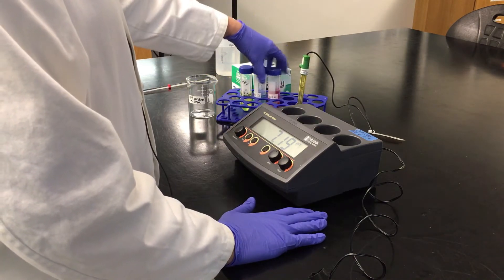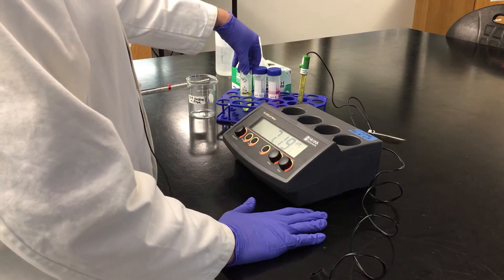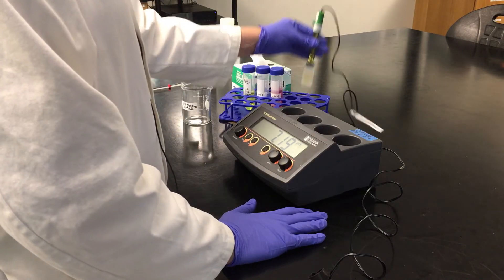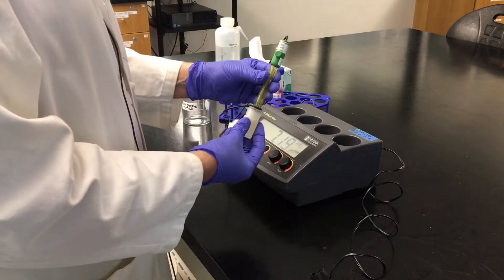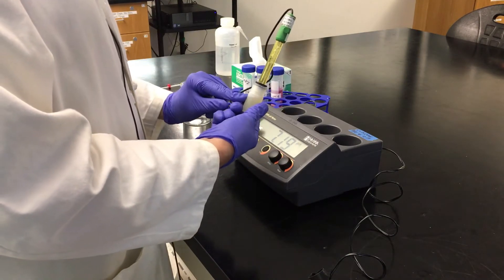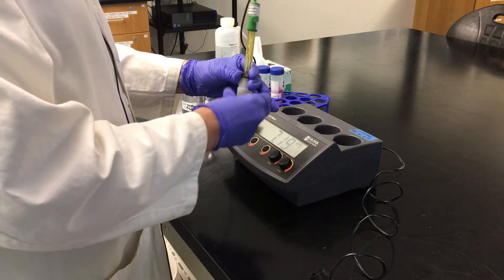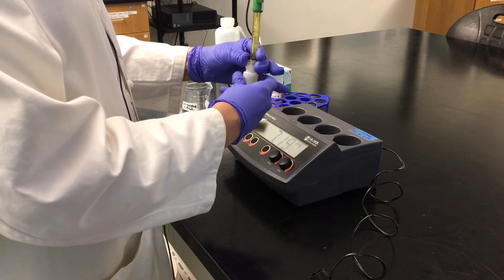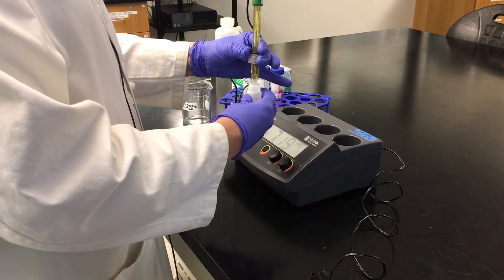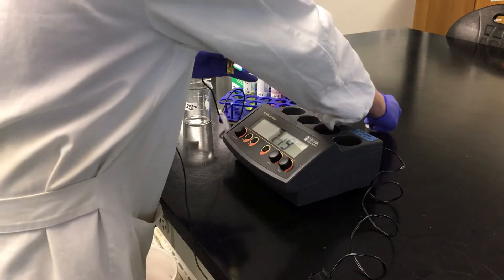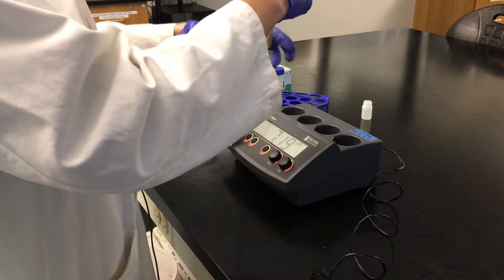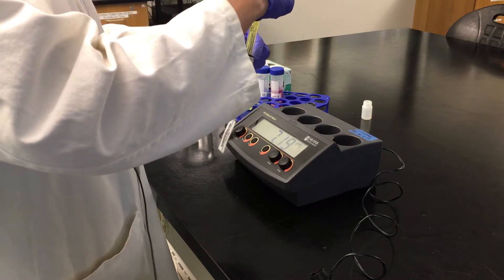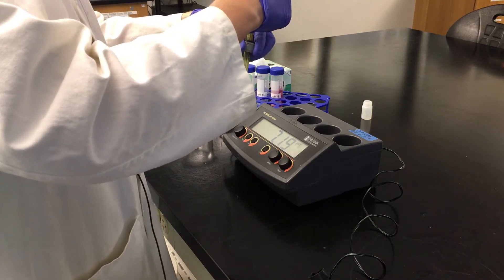Here we have a pH 4, a 10, and a 7. The first thing we need to do is remove the storage solution from the bottom. So to do that, just carefully unscrew the bottle and set it aside. The cap can then easily be slid up and out of the way.